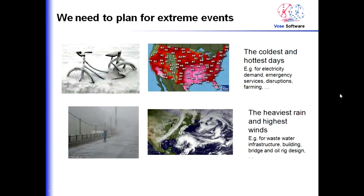We need in life to plan for extreme events — for example, the coldest and hottest days for electricity demand, emergency services, disruption, farming, etc. We've got an extreme event going on right now in New York. We're recording this webinar for our users there because they probably have no internet access right now — the heaviest rain and the highest winds, which is the topic of concern for them.